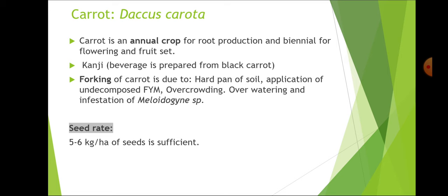Forking of carrot occurs due to: hard pan of the soil, application of undecomposed FYM, overcrowding, overwatering and infestation of Meloidogyne species. Forking occurs when hard soil does not allow the straight growth of roots.